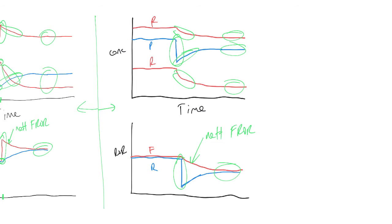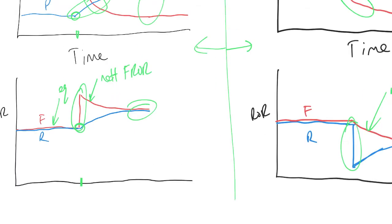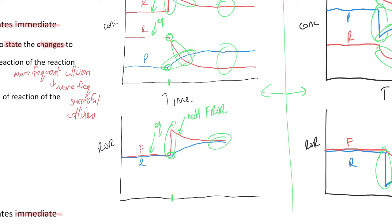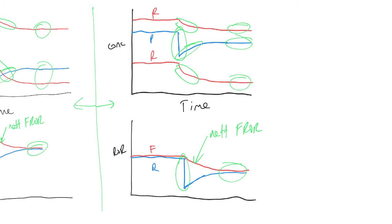There's still a net forward reaction because the reverse reaction changed. To determine the net reaction: one of the reactions will change — go up or down — and the other has remained the same. The net rate of reaction is whichever one is higher after the change. On the left-hand side, the net reaction is the one that increased. On the right-hand side, the net reaction is the one that stayed the same, because you have to think about what occurred and work out what the net rate of reaction is.